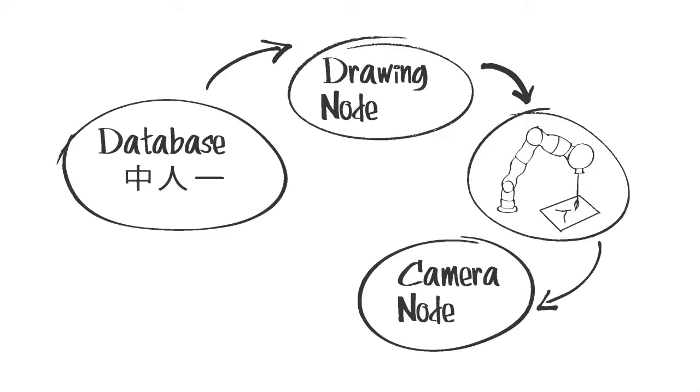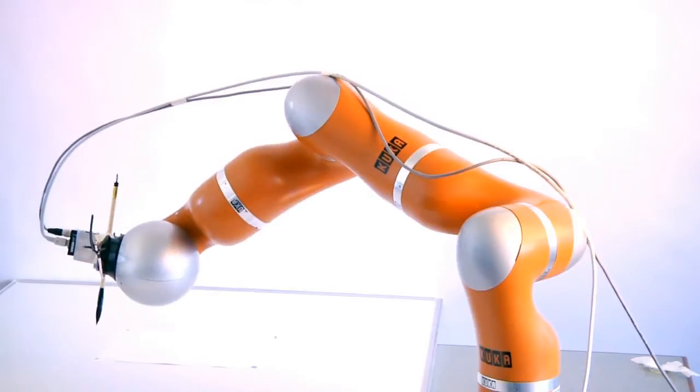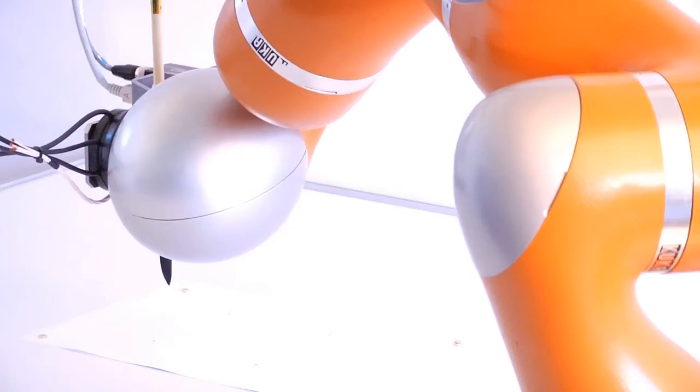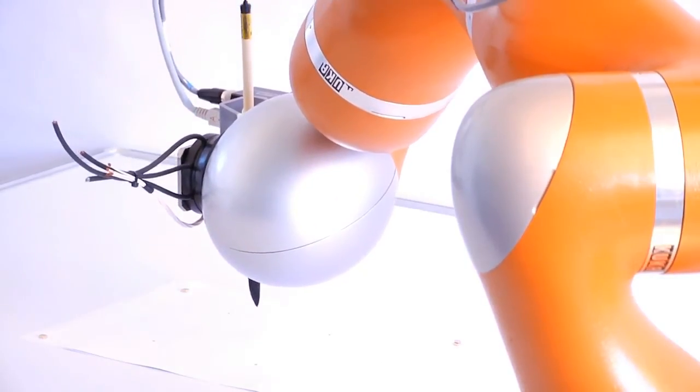Then the camera is positioned above the paper and the camera node searches for the red calibration points to find the region containing the character.